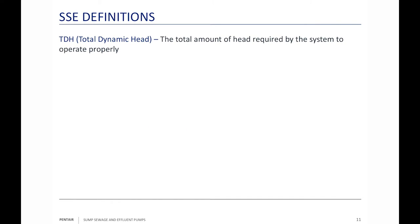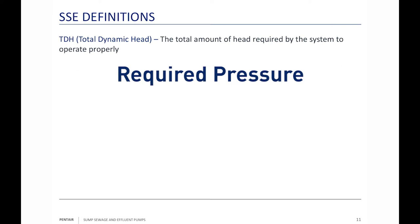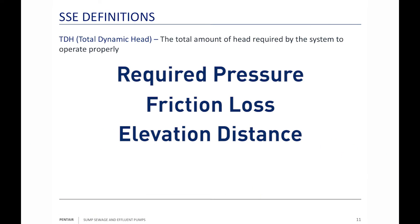TDH — total dynamic head — is a measure of all the energy required by the system to accomplish the task. It takes into consideration: pressure (for example, if pumping into a pressurized city system you must overcome that pressure at the curb stop), friction loss (how far away you're dumping the water, which adds up quickly if pipe sizing isn't careful), and elevation difference from the off switch to the highest point you have to pump. Those three things added together make your TDH.